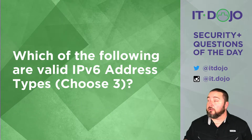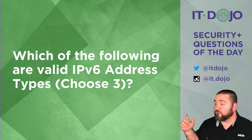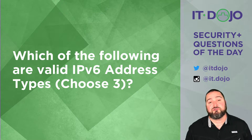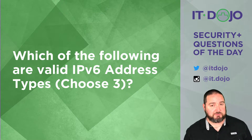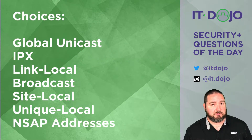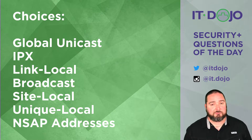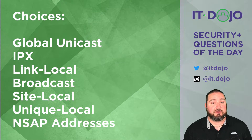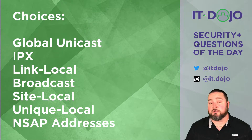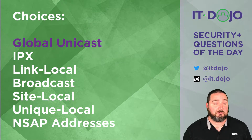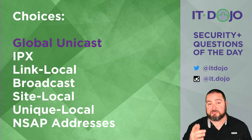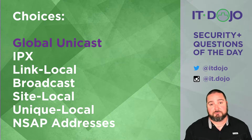Next question up. What I want to know is which of the listed choices are valid IP version 6 address types — there are three correct answers. The first correct answer is global unicast IP address. Global unicast IPv6 is absolutely a valid IPv6 address type.